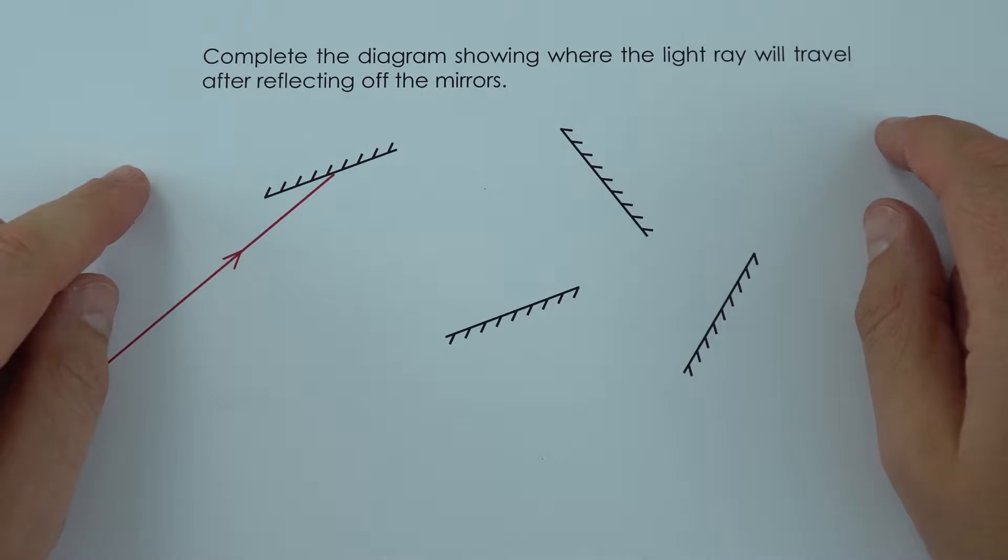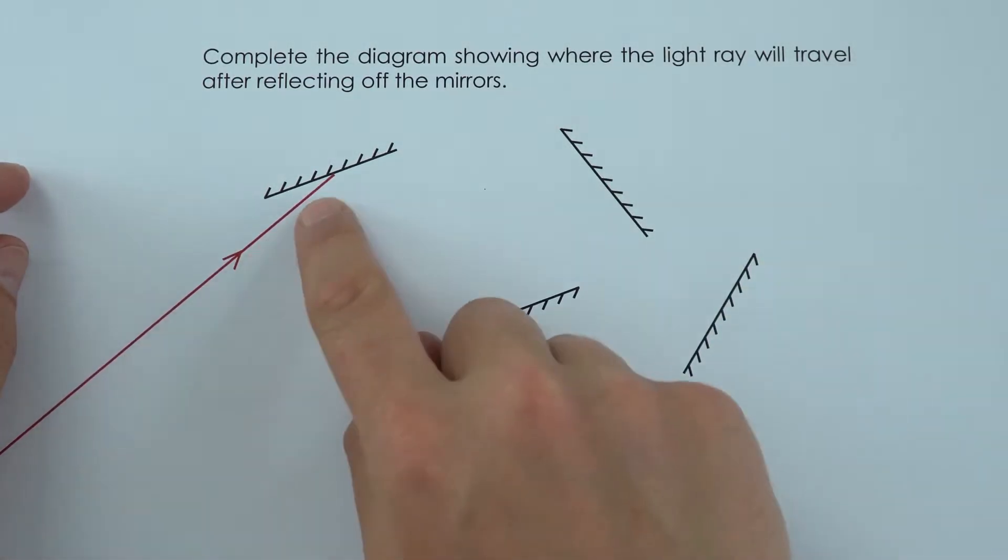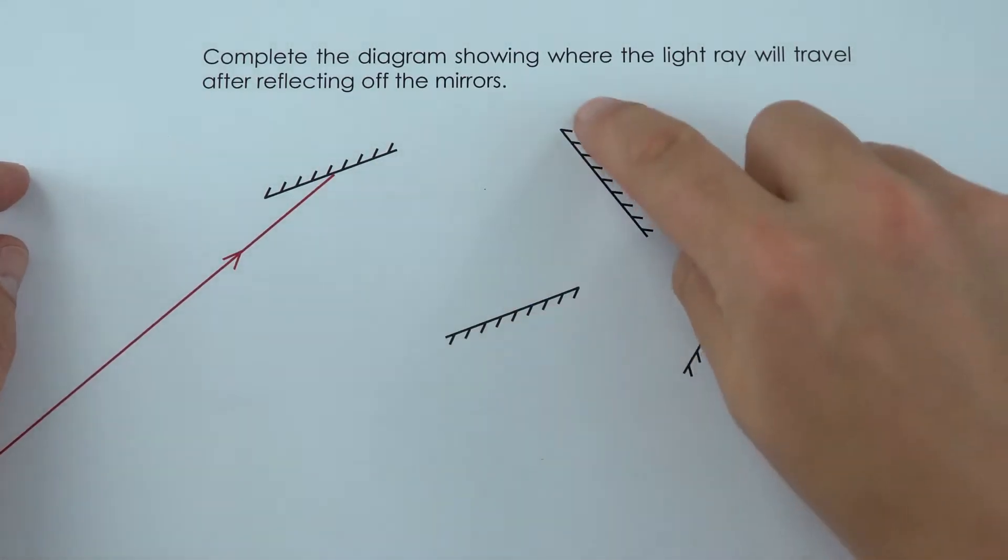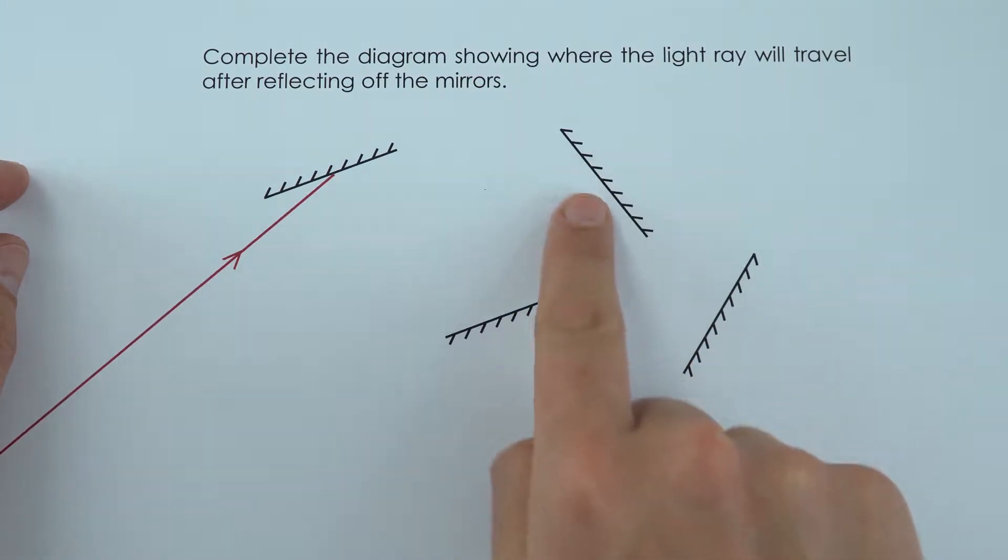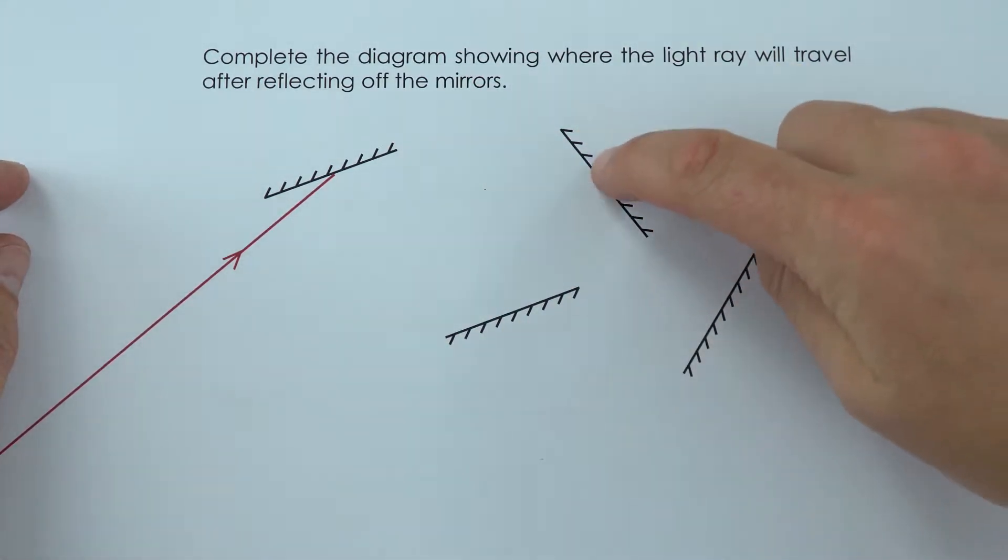In this question we need to complete the diagram showing where the light ray will travel after reflecting off the mirrors. So these are just my mirrors and I've got my reflective side which is like the flat side, and that just shows it's the back with that kind of line on there.